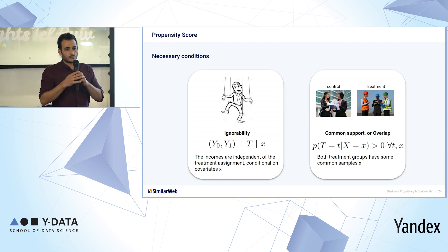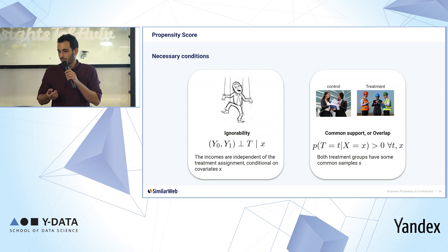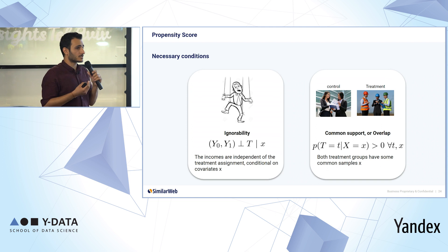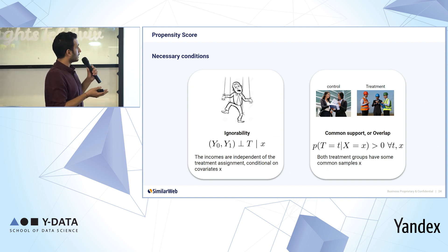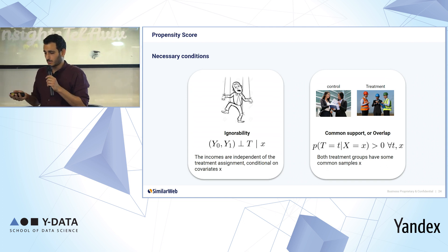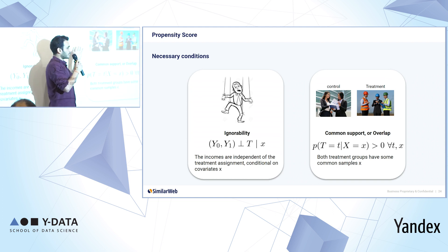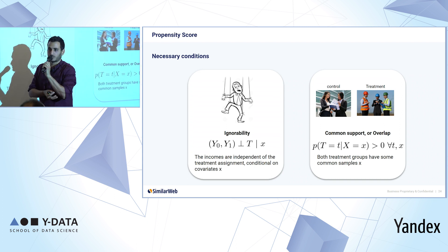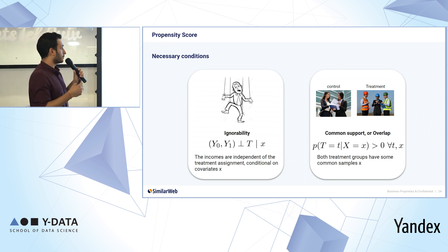Two necessary conditions before we continue. First, ignorability: the outcomes are independent of the treatment assignment, conditional on covariates X. That means deciding to put someone in treatment or control does not affect the outcome. Second, common support or overlap: both treatment and control groups must have some common samples X. We don't want a situation where the control group is only female analysts and the treatment group only male engineers — in that case, we couldn't build a classifier to give proper propensity scores.